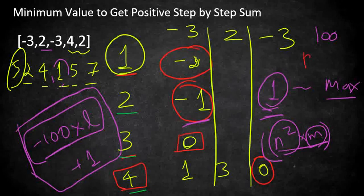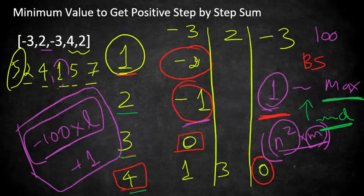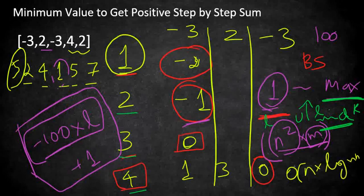The brute force can also be improved using binary search, since we know the lower bound (minimum value) and upper bound (maximum value). We fix a mid value and check whether we can pass with it. If yes, we shift to lower bounds; if not, we update lower bound to mid plus one. This gives O(n × log m) time — better than brute force, but still not optimal.